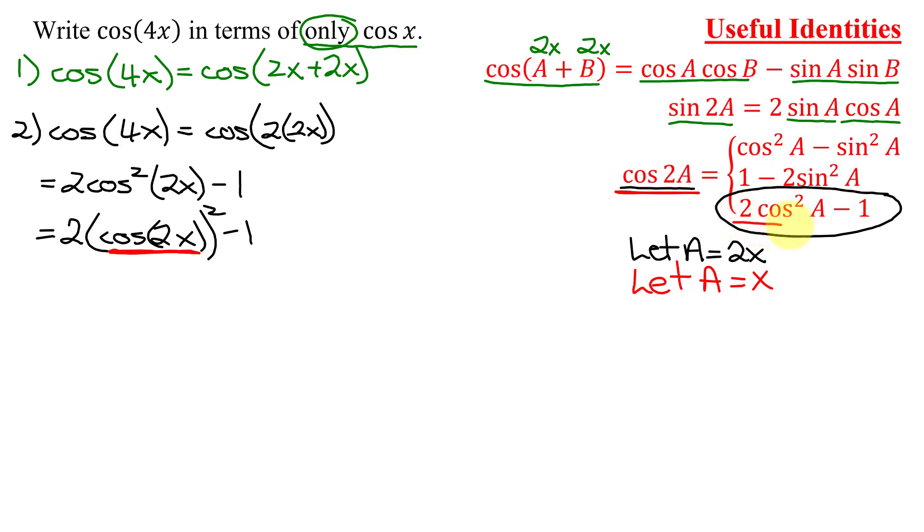So I'm going to use this expression where a equals x. So I'm going to have 2 times the quantity, instead of the cosine of 2x, I'm going to have 2 cosine squared x minus 1. And then I have to square it and subtract 1. So all I did was replace cosine 2x with 2 cosine squared x minus 1.